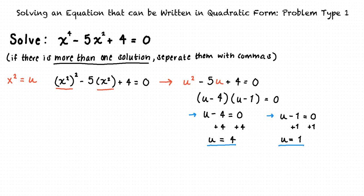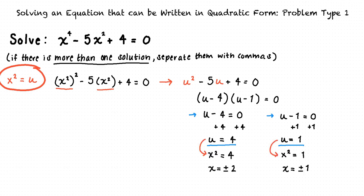Are these our final answers? Not quite. Remember that we initially replaced x squared from our original equation with u to make it easier to solve. Now, we will substitute x squared back in for u. Our final solution is x equals negative 2, negative 1, 1, and 2.